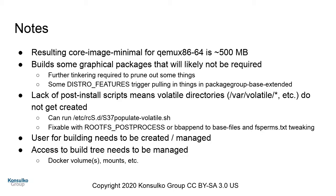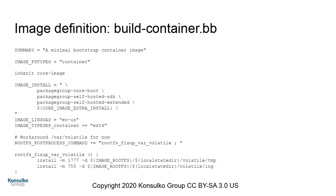You can tweak the distro features to make it even smaller — cut out a few things that would get pulled in by default by the package group. One thing to note: our volatile directories support basically relies on post-install scripts. When you're using a container, unless you're doing a Dockerfile, you basically aren't going to have those in the tarball. So you have to make sure the volatile directories are created. If you're using this container for actual OE builds, you also need to handle the build user and manage directory trees for your source trees.